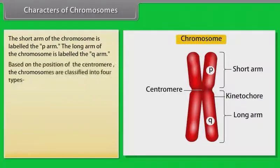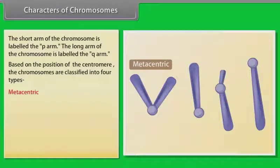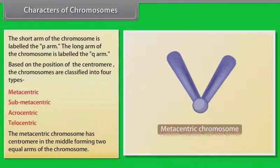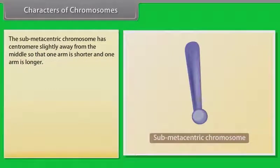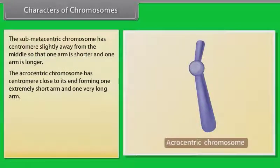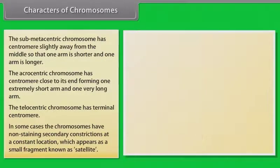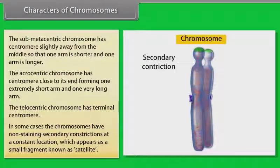Based on the position of the centromere, chromosomes are classified into four types: metacentric, submetacentric, acrocentric, and telocentric. The metacentric chromosome has the centromere in the middle, forming two equal arms. The submetacentric chromosome has the centromere slightly away from the middle, so one arm is shorter and one is longer. The acrocentric chromosome has the centromere close to its end, forming one extremely short arm and one very long arm. The telocentric chromosome has a terminal centromere. In some cases, chromosomes have non-staining secondary constrictions at constant locations, which appear as a small fragment known as a satellite.